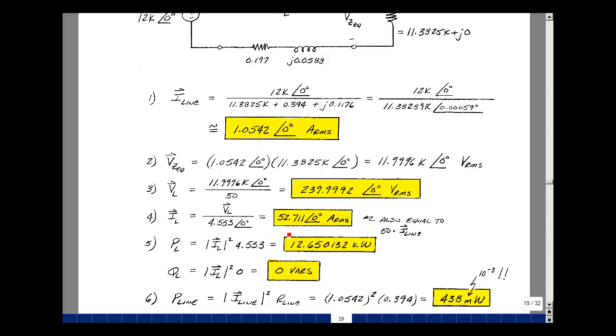This is also 50 times the line current. As we step the voltage down, we step the current up. The power now dissipated in the load is equal to the magnitude of the current squared times the real part. And that's 12.650132 kilowatts. The reactive power is still zero because I have a zero reactive part.